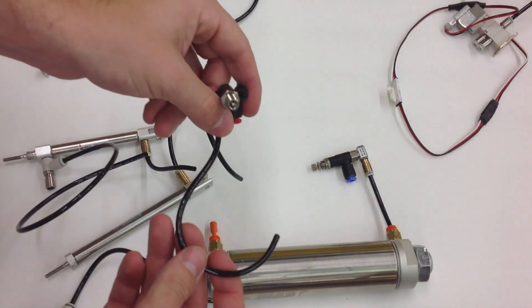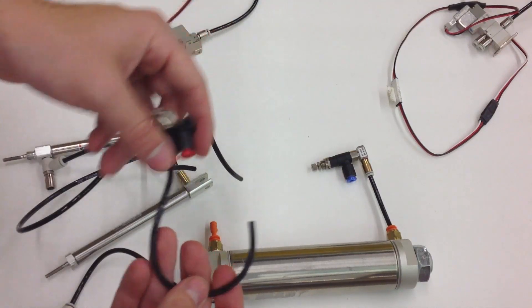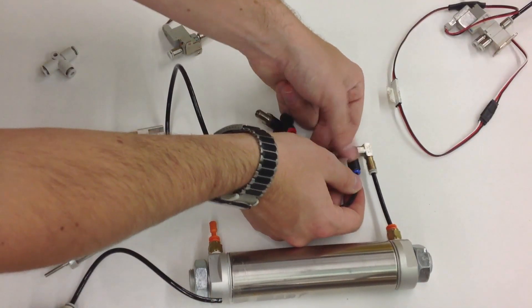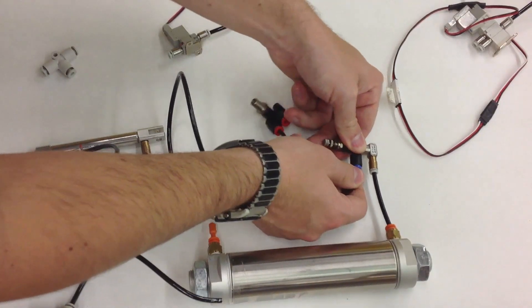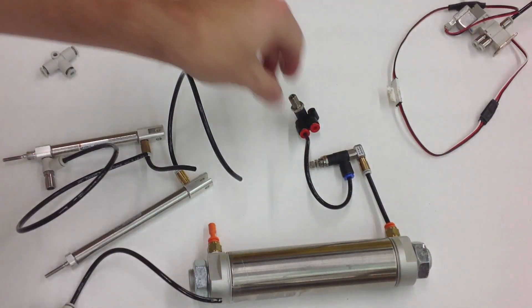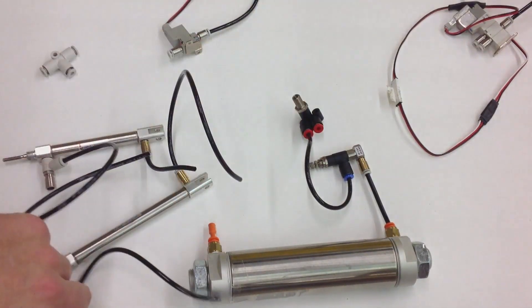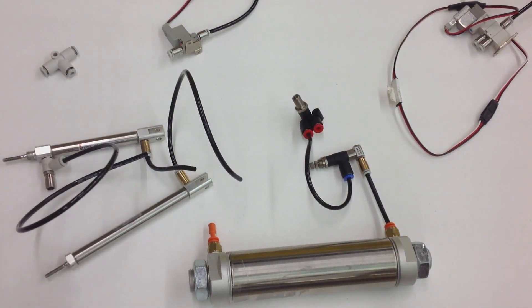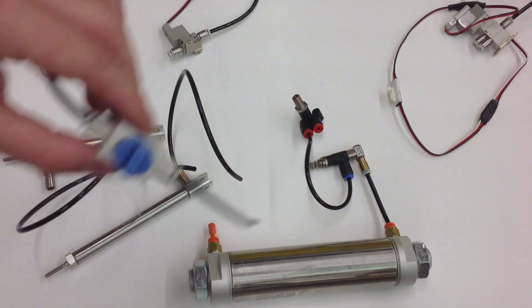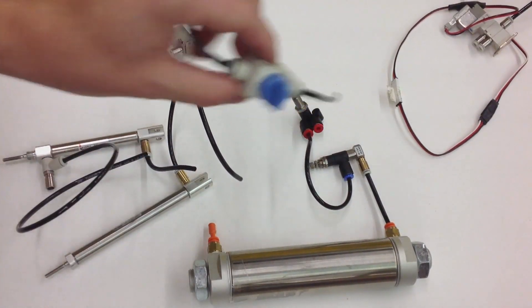The next thing you need is the pressurization valve. This will allow you to fill your reservoir and the whole pneumatic circuit. You connect that here, all the way in the bottom. That will allow you to pressurize the circuit. And the safety valve will release if I pump it too much.